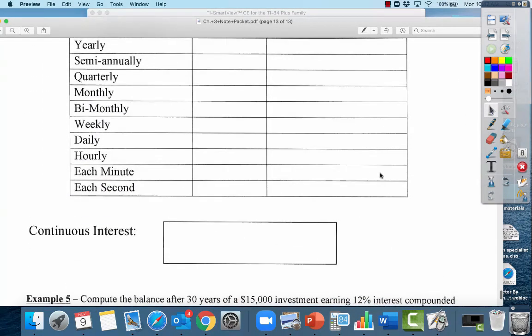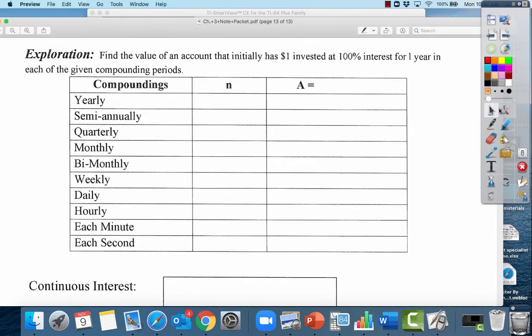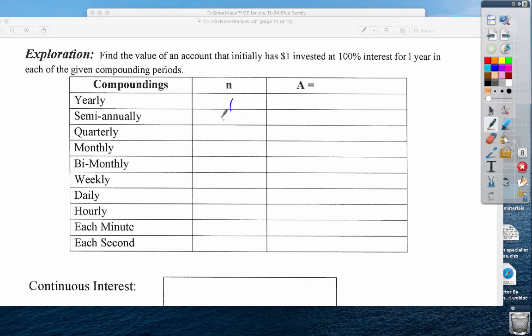Down here, continuous interest. We can fill in what would your n be: yearly is 1, semi-annually is 2, quarterly is 4, monthly is 12, bi-monthly, weekly, daily, hourly is times 24 is 8,760. The faster, the bigger your compounding.